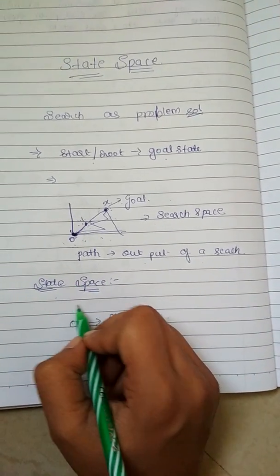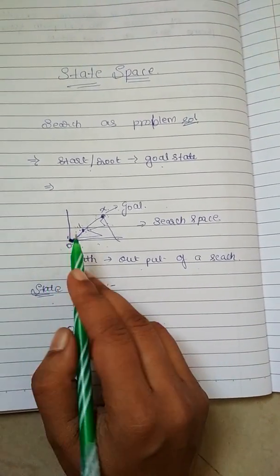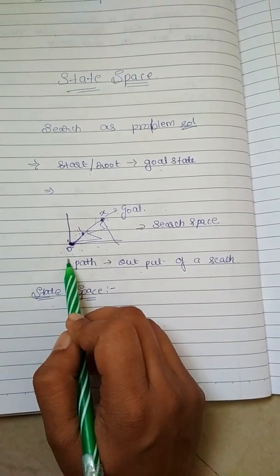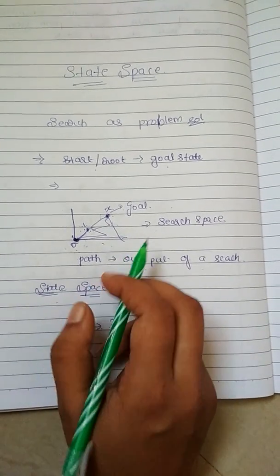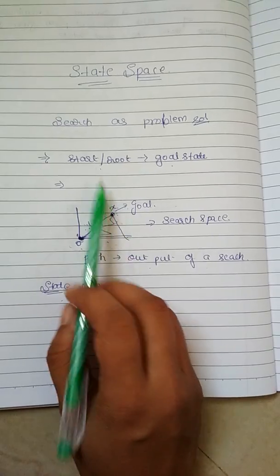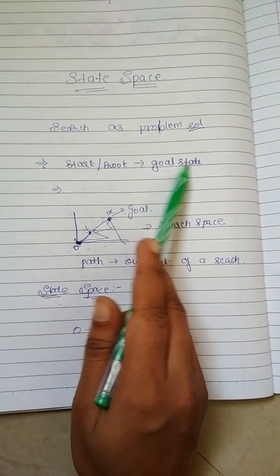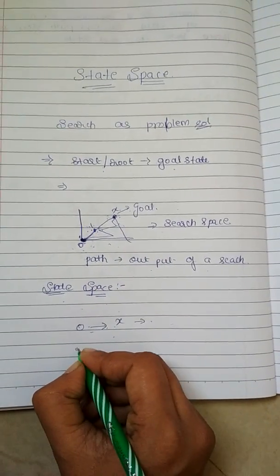State space definition: the different states in order to reach from initial state to a goal state is called as state space. Now, the state search as a problem solution - there is a search called heuristic search. Heuristic search is of two types.